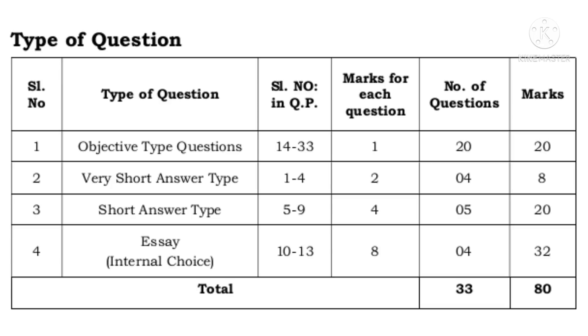Number three, short answer type questions are from question number 5 to 9 and each carries 4 marks. There are 5 questions, so 5 into 4 is 20 marks. Number four, essay, internal choice is available. The questions are from 10 to 13, each carries 8 marks. There are 4 questions, 4 into 8 is 32 marks. So total questions are 33 and total marks is 80.